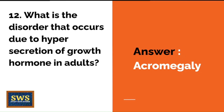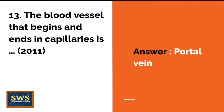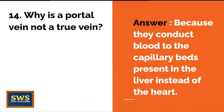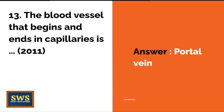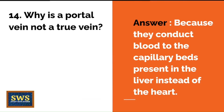Question 12: What is the disorder that occurs due to hypersecretion of growth hormone in adults? The correct answer is acromegaly. If it occurs from childhood, it would be gigantism. Question 13: The blood vessel that begins and ends in capillaries is the portal vein. A related question — why is the portal vein not a true vein? Because it conducts blood to the capillary beds present in the liver instead of the heart.